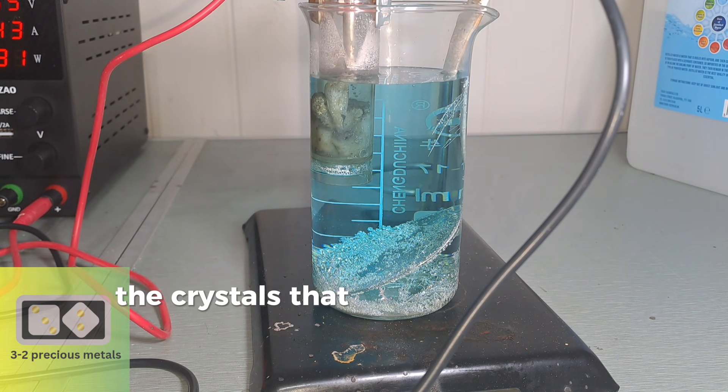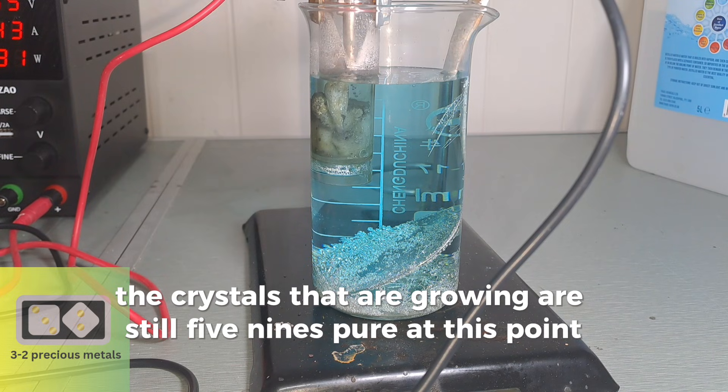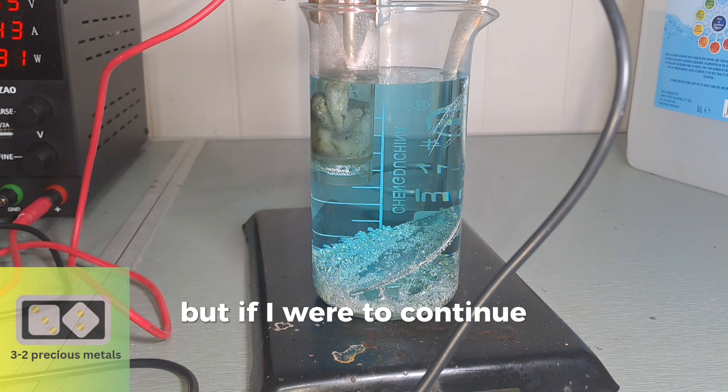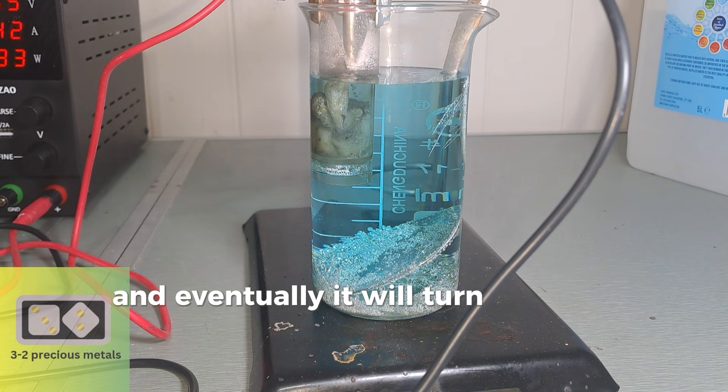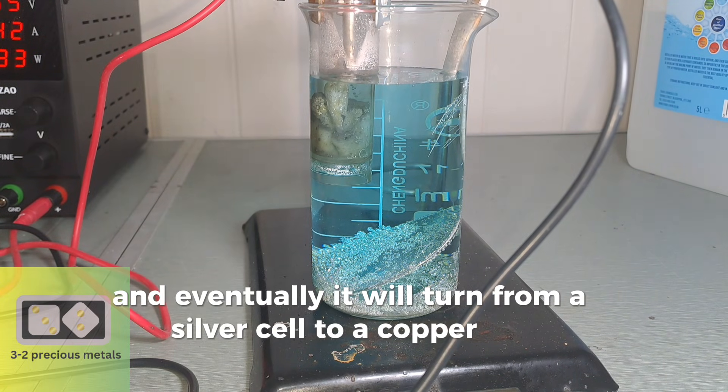The crystals that are growing are still 5.9's pure at this point, but if I were to continue, the electrolyte will be saturated with copper, and eventually it will turn from a silver cell to a copper cell.